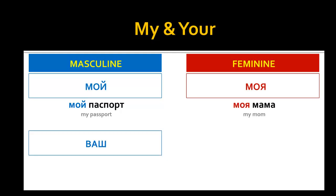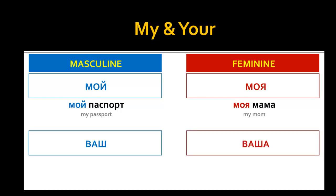Your in Russian means Ваш for masculine and Ваша for feminine nouns. For example, 'your museum' is Ваш Музей in Russian, and 'your station' is Ваша Станция.